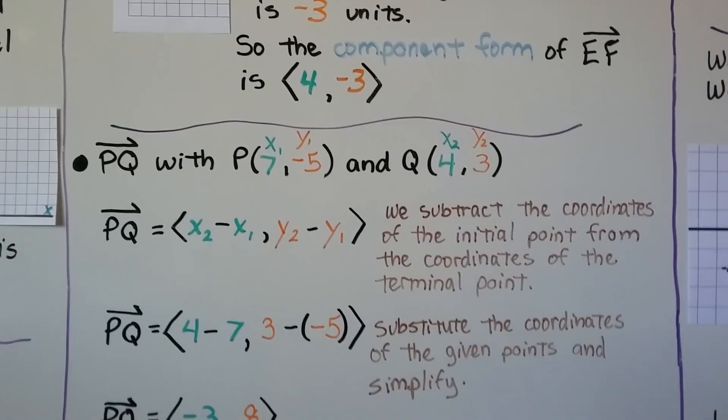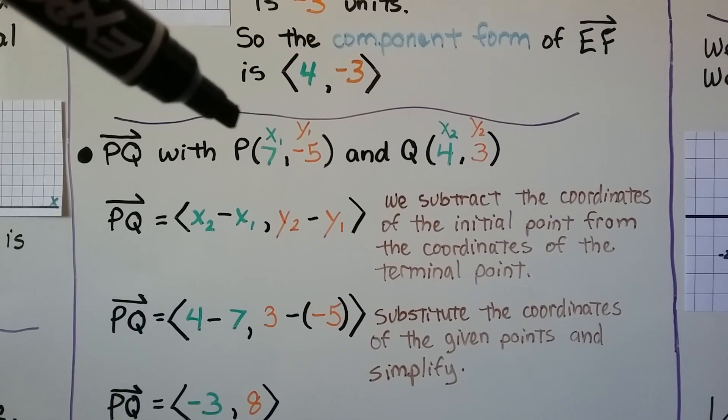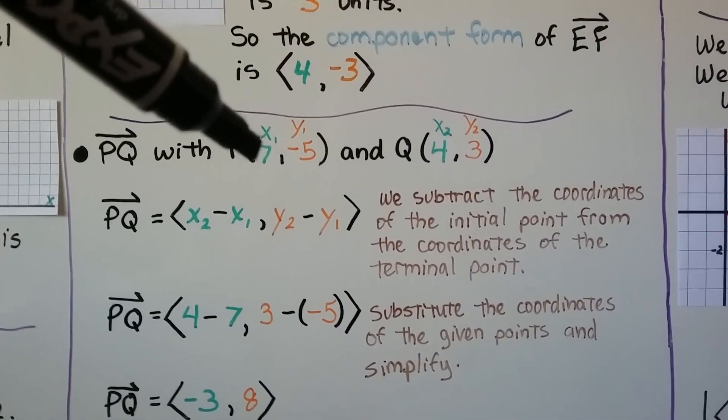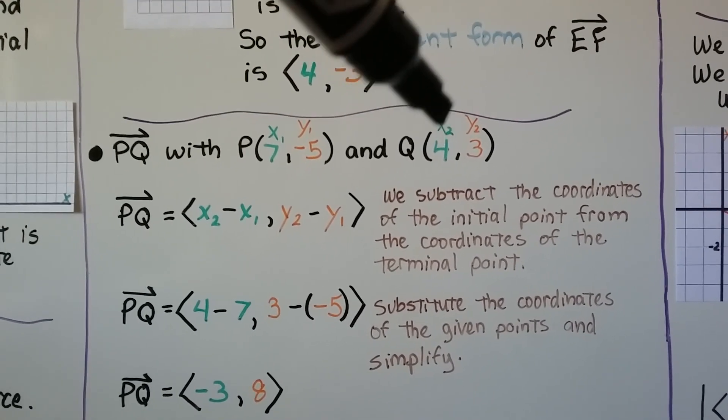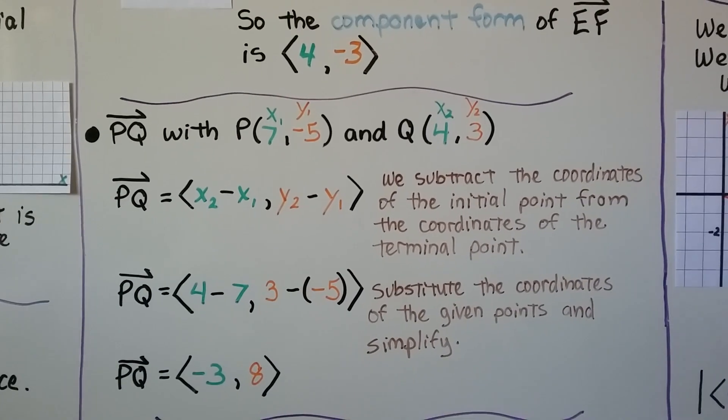The vector PQ, it's got an initial point P of x sub 1 is 7, y sub 1 is negative 5. And our terminal point Q, our x sub 2 is a 4, and our y sub 2 would be a 3.